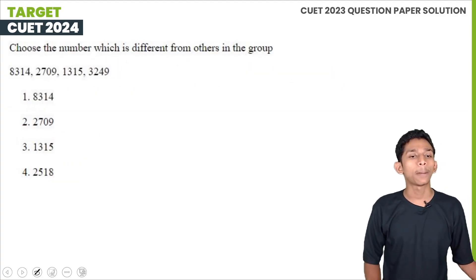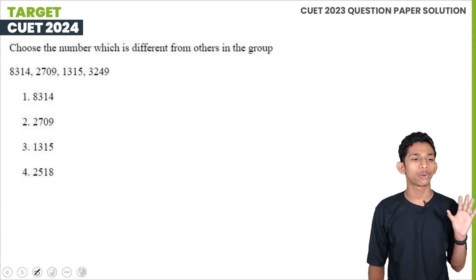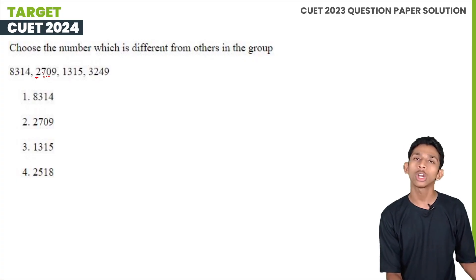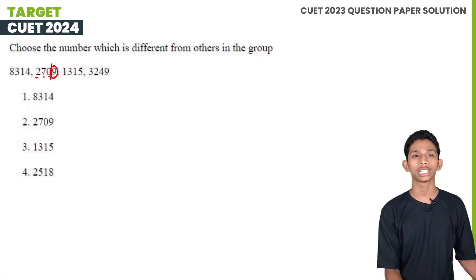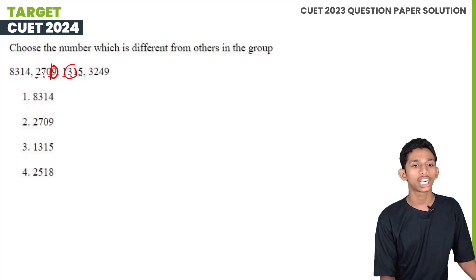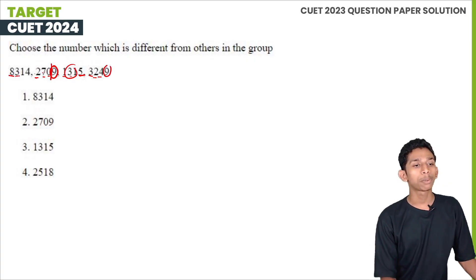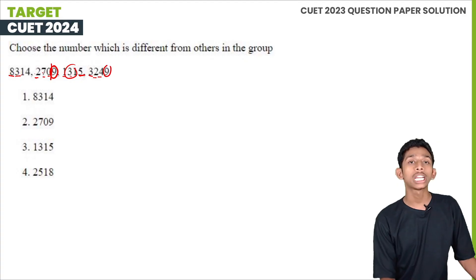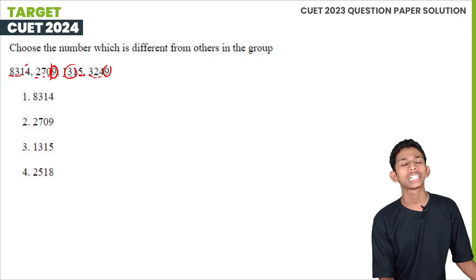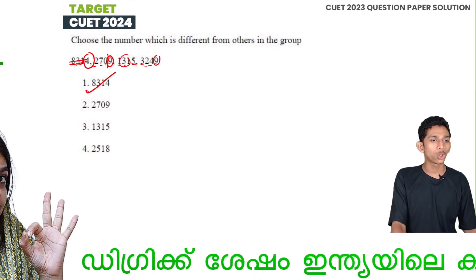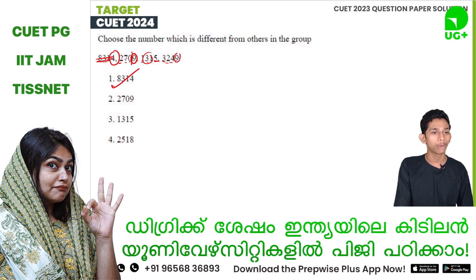Next question: choose the number which is different from others in the group. This is an odd-one-out type question. The pattern: 2+7=9, 9+0=9 — last term matches. Then 1+3=4, 4+1=5 — last term. Next 3+2=5, 5+4=9. Next 8+3=11, 11+1=12 — last term. Then 4+1=5, 5+3=8 — last term. The odd one out is the group 8, 3, 1, 4.